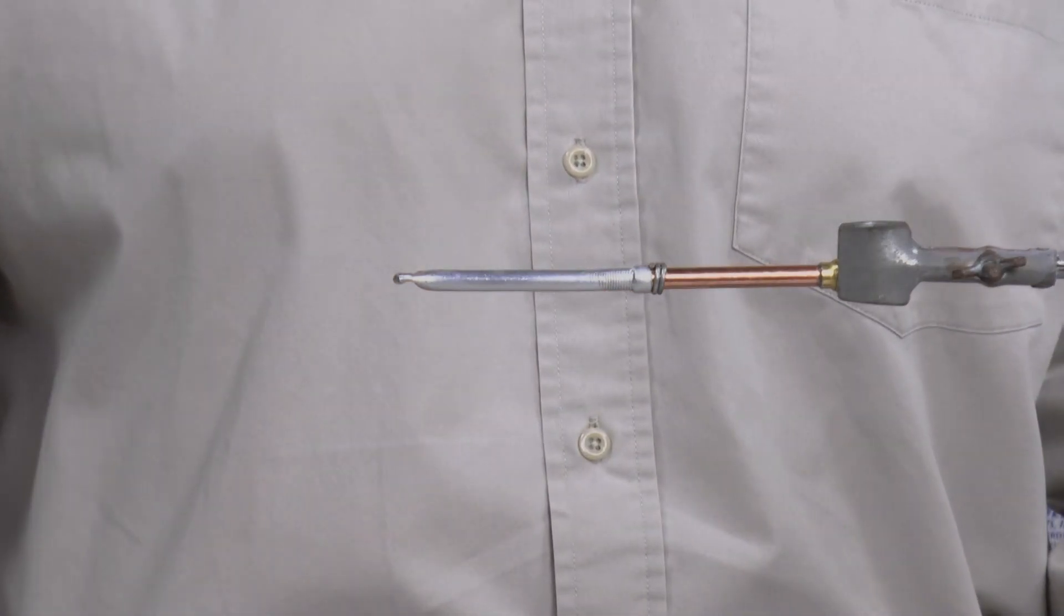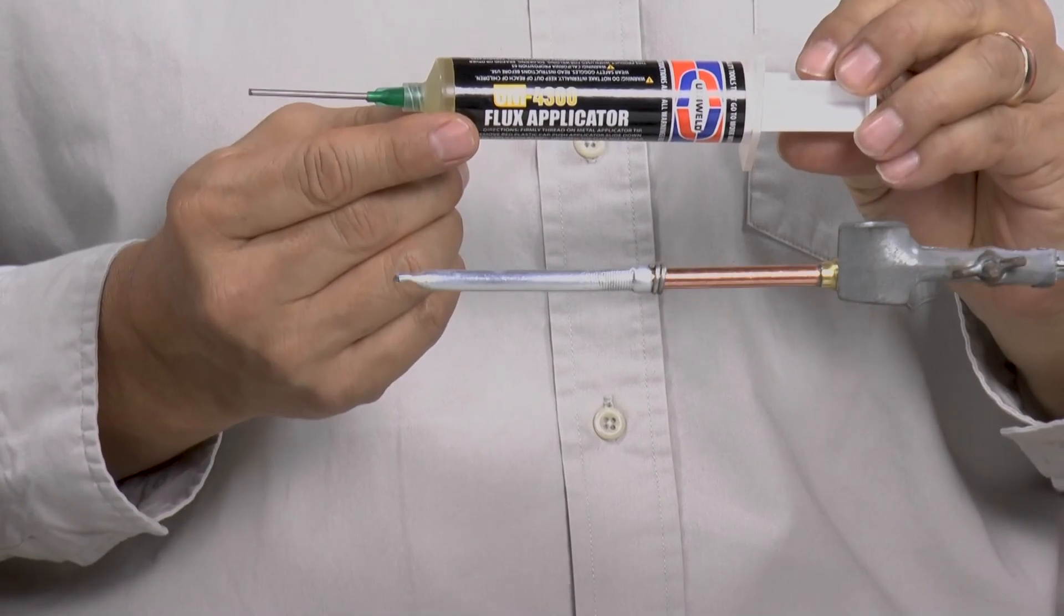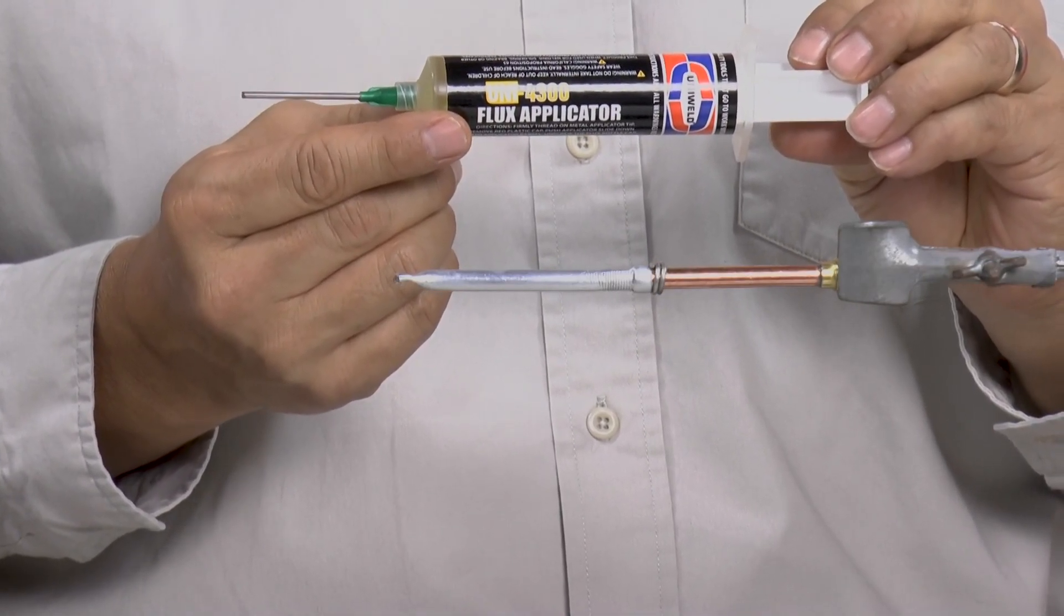You want to make sure that the tubes are free from oil and are clean. We're going to use the Uni4300 soft solder flux in this handy flux applicator with a metal tip.